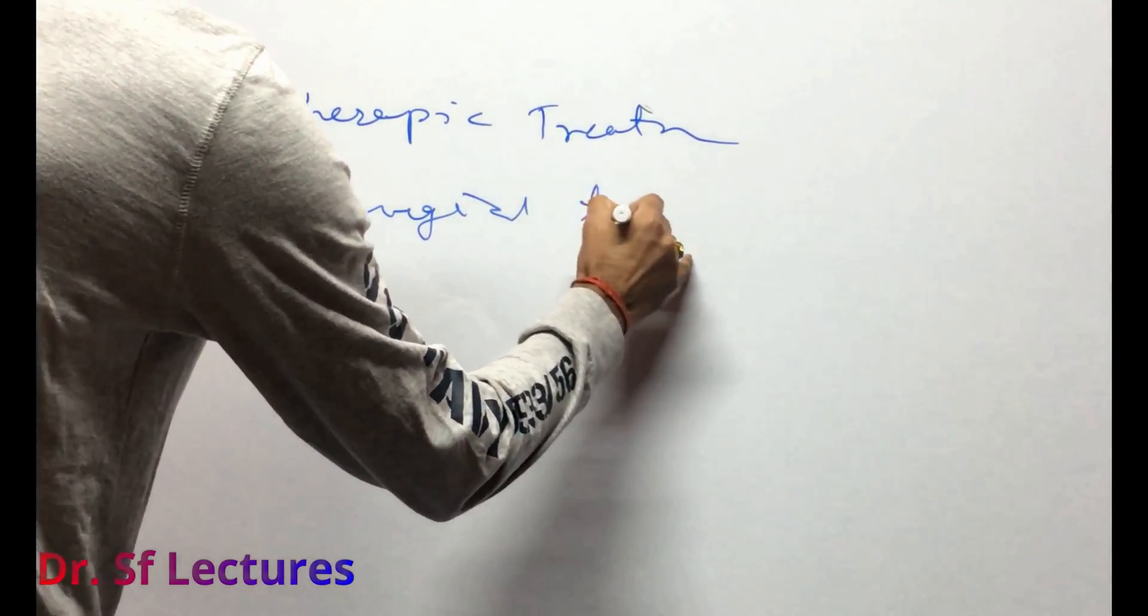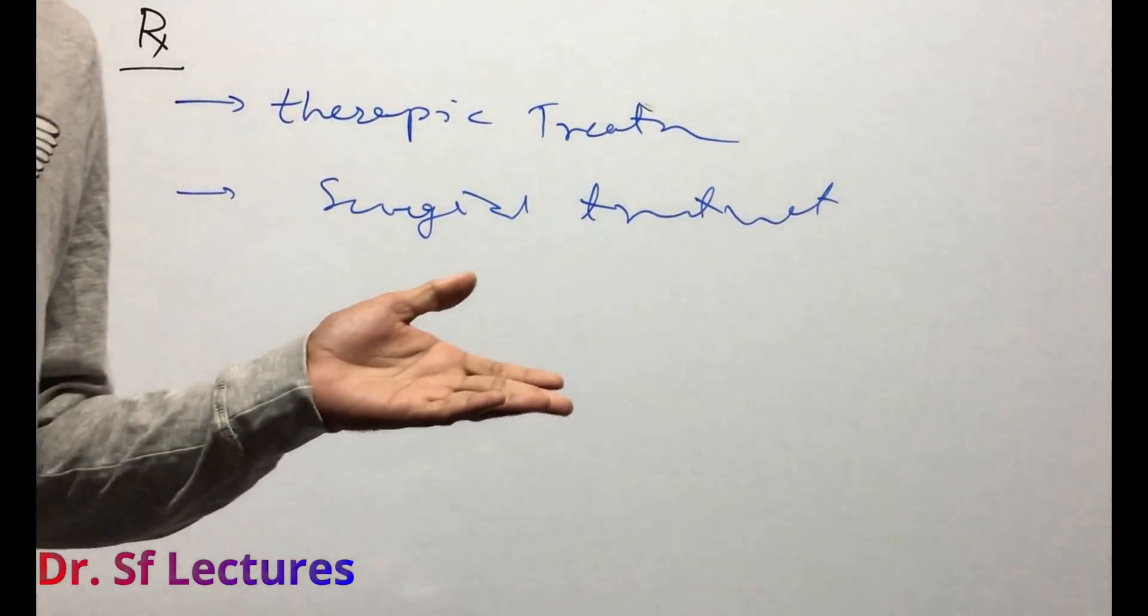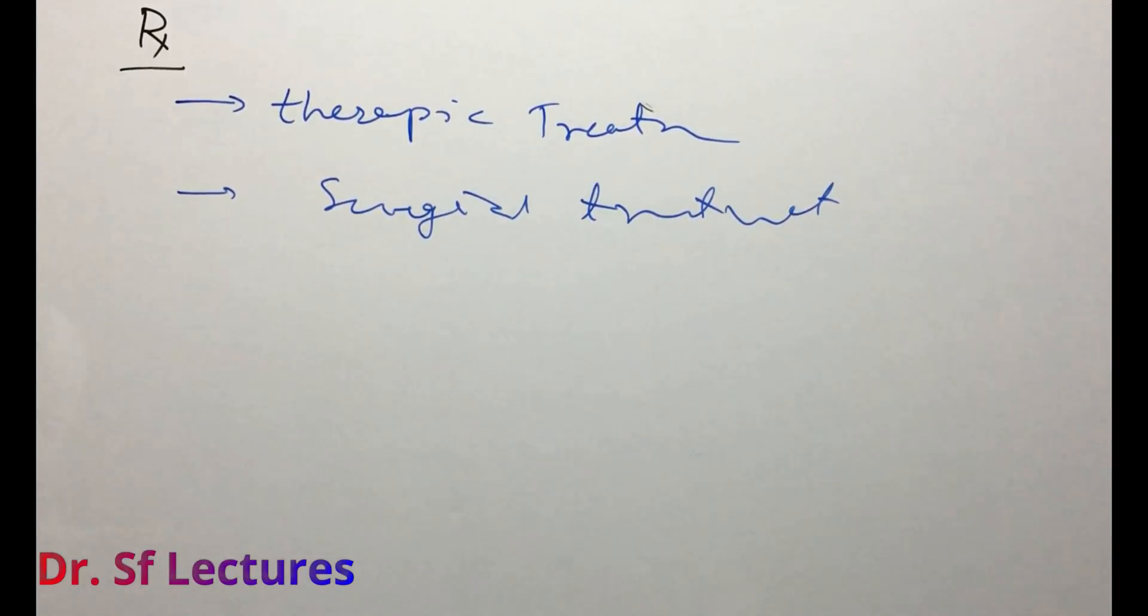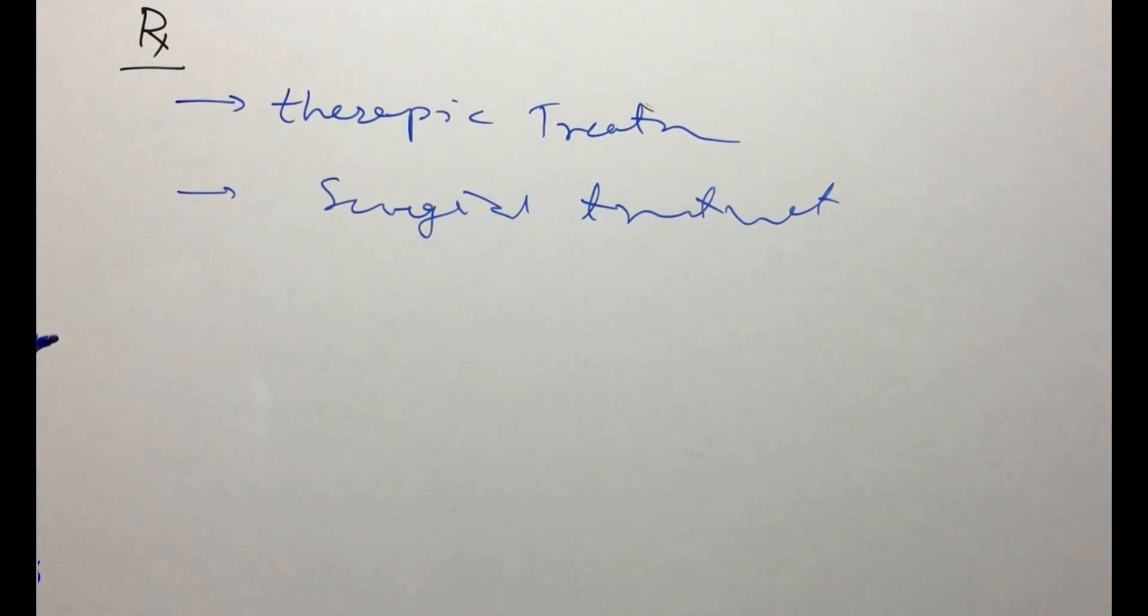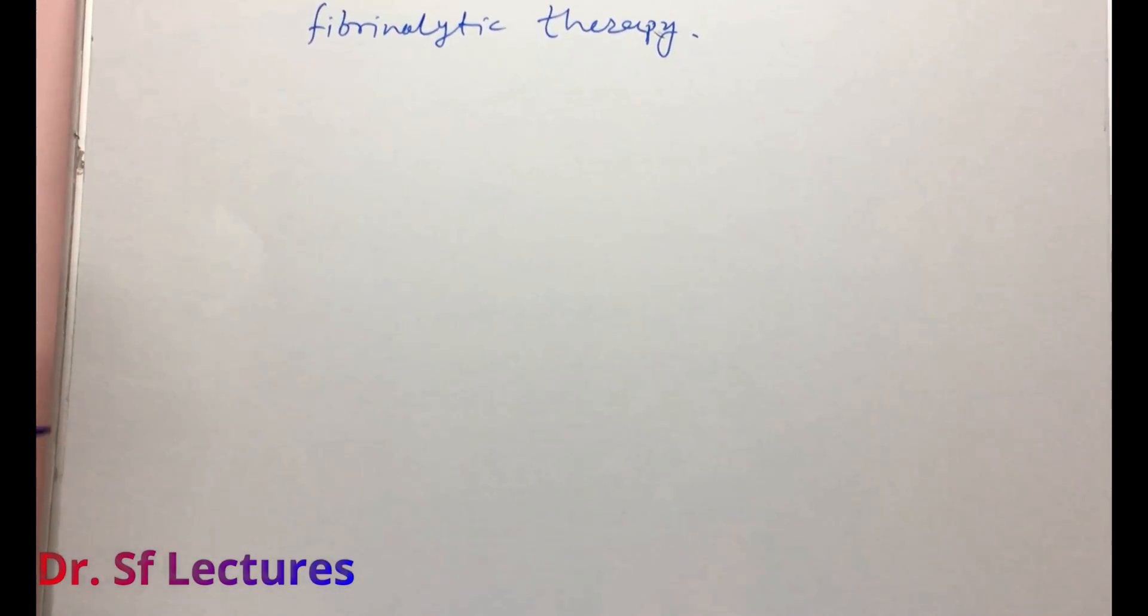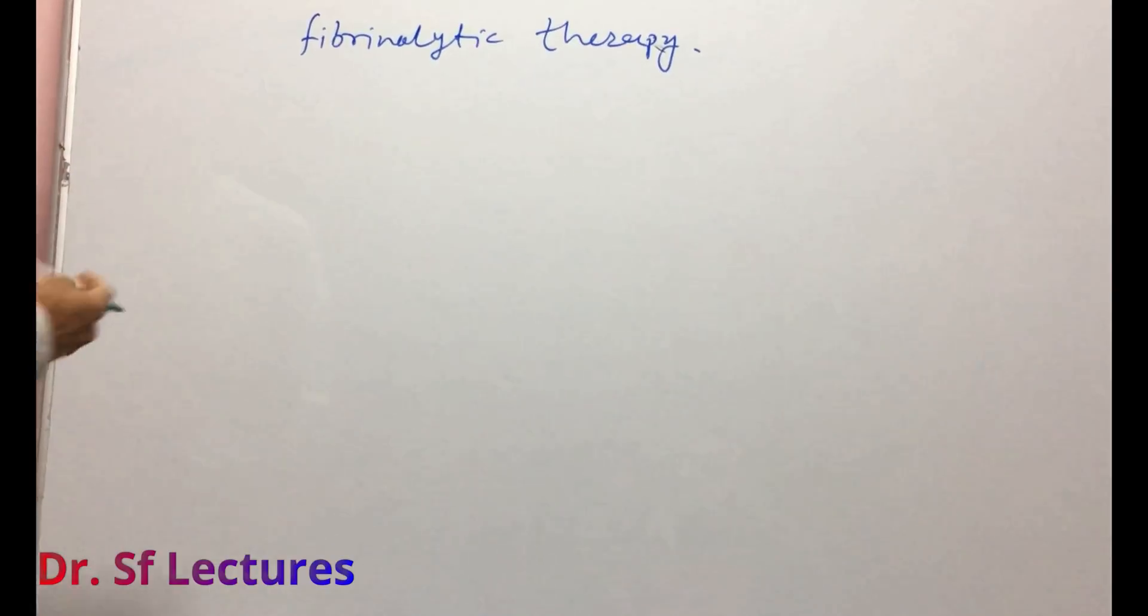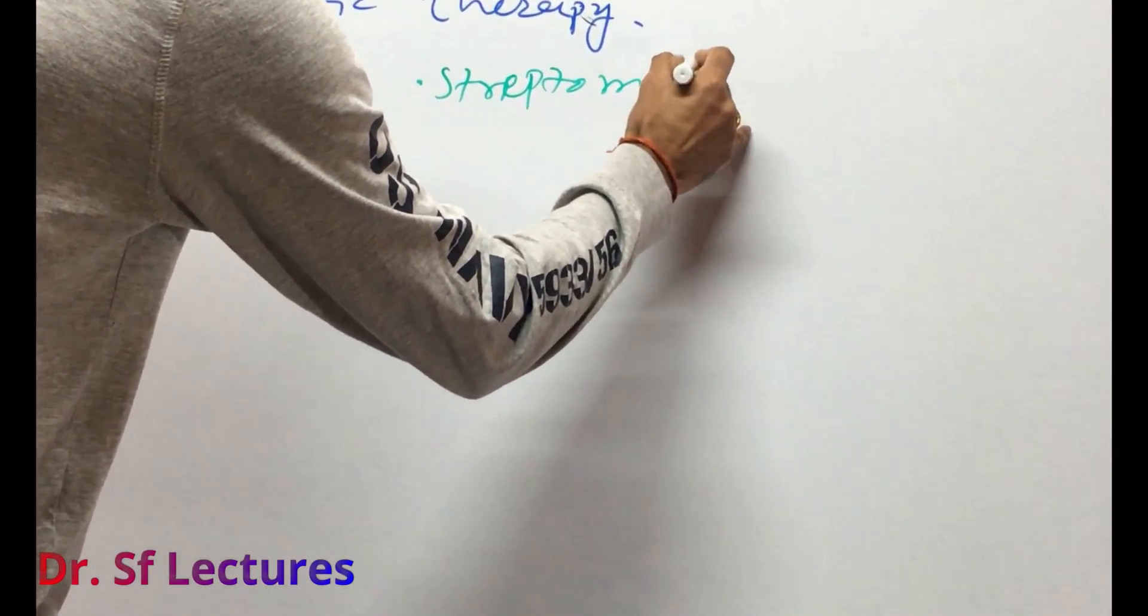In therapeutic treatment we can use some agents. Anyone know some agents in therapeutic treatment? Yes, streptokinase. What is streptokinase? It's a fibrinolytic agent. So first we are going to talk about therapeutic treatment, fibrinolytic therapy. In fibrinolytic therapy there is one example like streptokinase.